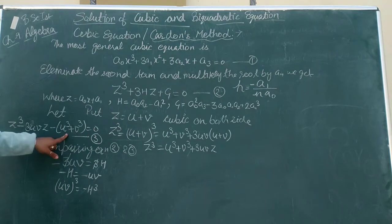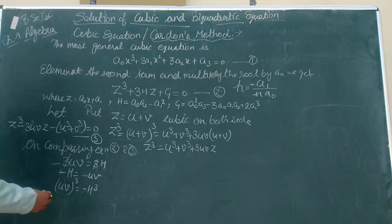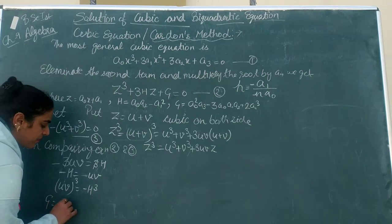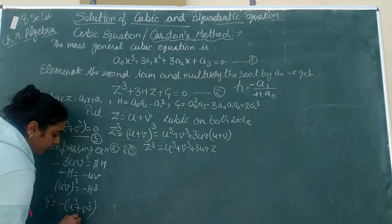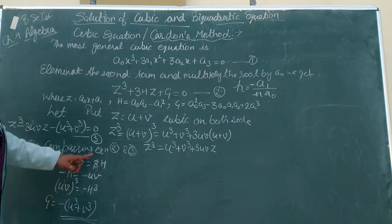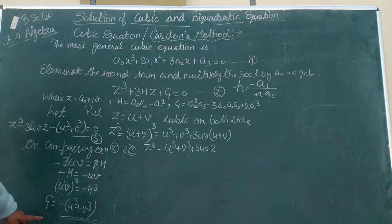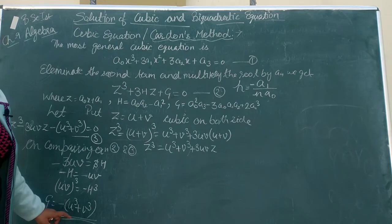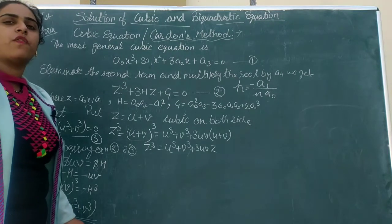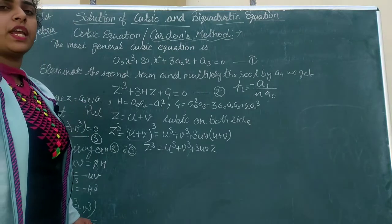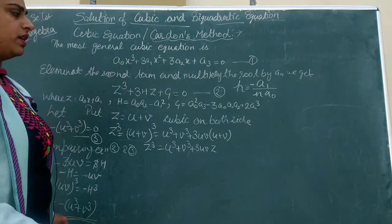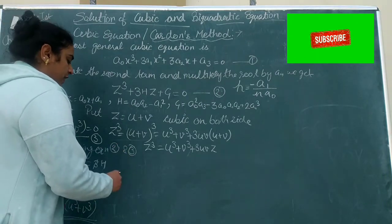Comparing constant terms: G = −(U³ + V³), so U³ + V³ = −G. We now formulate a quadratic equation whose roots are U³ and V³.